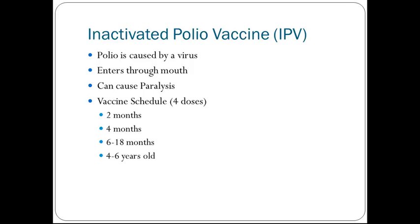Inactivated polio vaccine. Polio is caused by a virus and generally does not occur in the United States anymore; it is more prevalent in third-world countries. It enters through the mouth and can cause severe paralysis. There are four doses typically given to patients at 2 months, 4 months, 6 to 18 months, and 4 to 6 years old.